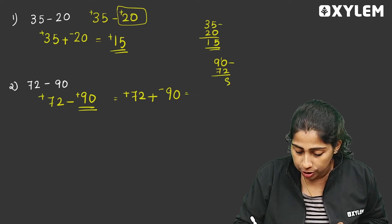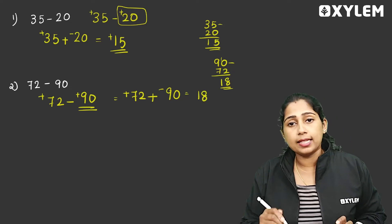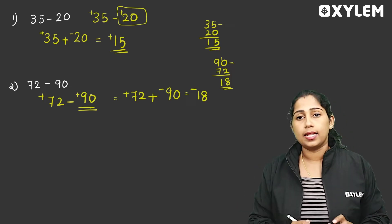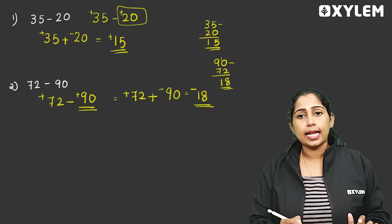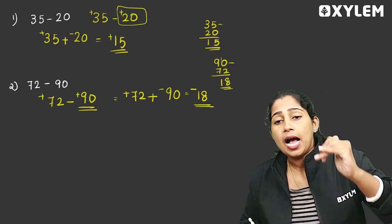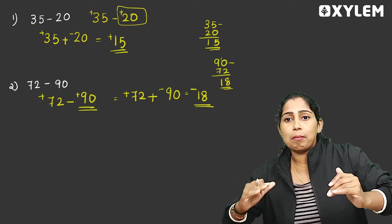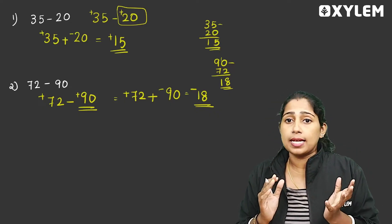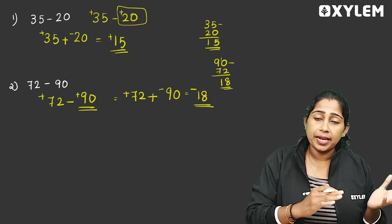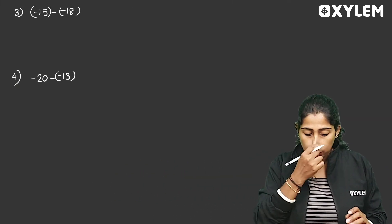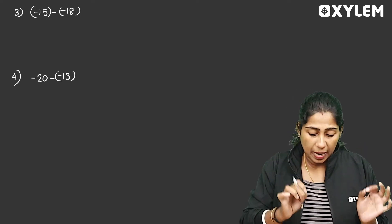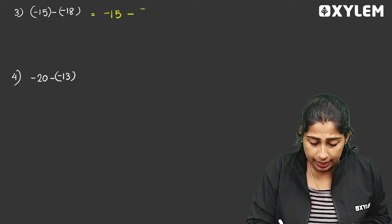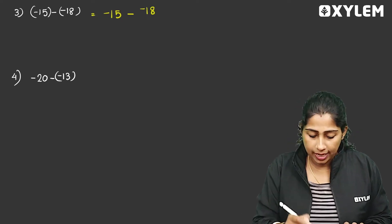If we do subtraction, we will add two different sign numbers, then we will subtract. 90 minus 72 is 18. 10 minus 2 is 8, so it is 18. The bigger number is 90, so the sign is minus. Minus 18 is the answer. Clear? Addition uses the additive inverse; the second number becomes the additive inverse; add the different sign numbers.